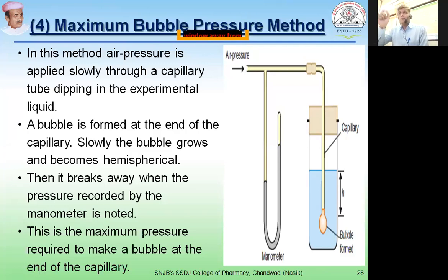At one air pressure, at the value of one air pressure, you will find that the air bubble grows in such a way that it breaks away and the point at which this air bubble breaks from the aperture of the capillary, that pressure is being noted from the manometer.